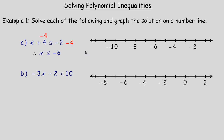Less than or equal to means below, but also including. The equal to sign means we would include the number negative 6 and put a solid dot there, and shade towards the left, which means below on the number line. That's how you would graph this solution on a number line.